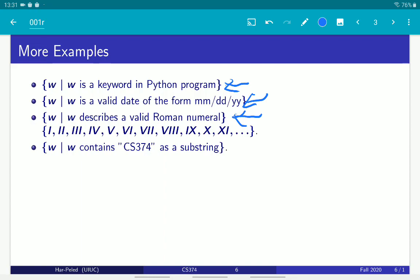Then we have things like w contains CS374 as a substring. Substring means here consecutively—a, b, a, CS374, I don't know, aba.